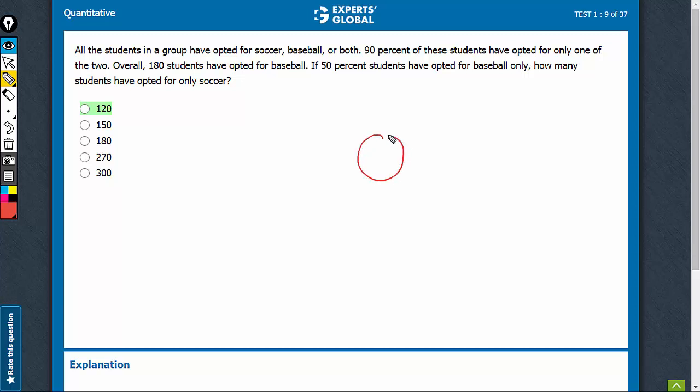The two groups involved are soccer and baseball. 90% of students have opted for only one of the two and 50% have opted for baseball only.